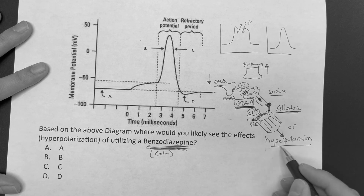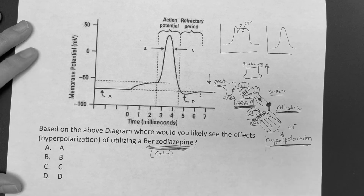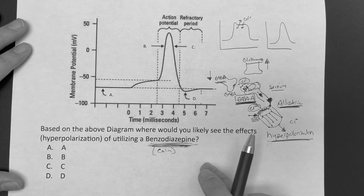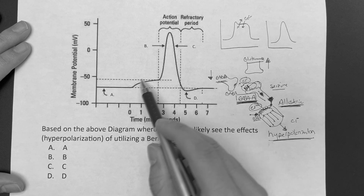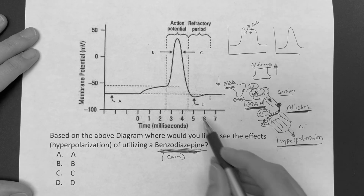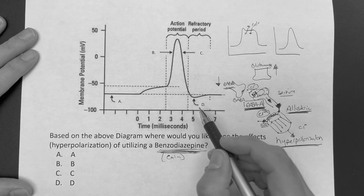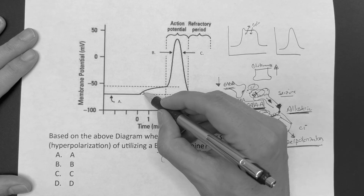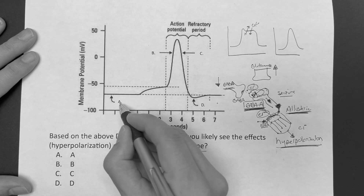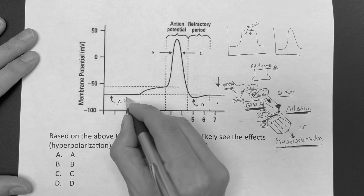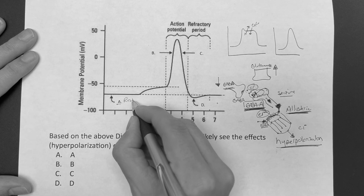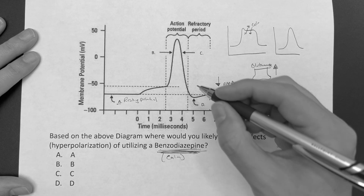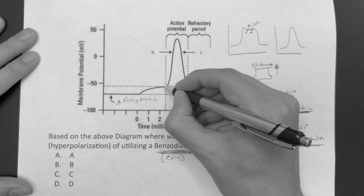So the key words here are GABA-A, allosteric, and hyperpolarization. Now, where does that occur in this diagram? Let's break it down simply. Point A on the graph is going to be the resting potential.